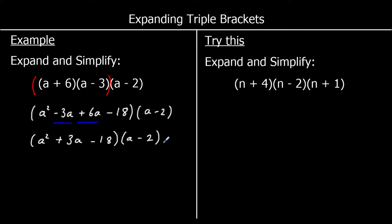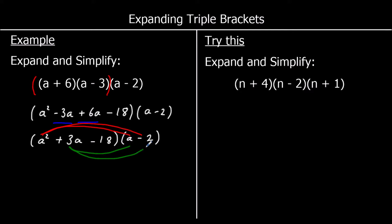And now we're going to expand and simplify again. We've now got three terms in the first bracket and two in the second bracket, so we're going to multiply all of the terms in the first bracket by both of the terms in the second bracket. So it's going to be a squared times a, a squared times negative 2, 3a times a, 3a times negative 2, negative 18 times a, and negative 18 times negative 2.